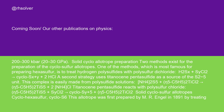The titanocene pentasulfide complex is easily made from polysulfide solutions: (NH4)2S5 + (η⁵-C5H5)2TiCl2 → (η⁵-C5H5)2TiS5 + 2 NH4Cl. Titanocene pentasulfide then reacts with polysulfur chloride: (η⁵-C5H5)2TiS5 + Cl-Sx-Cl → cyclo-Sx+5 + (η⁵-C5H5)2TiCl2.